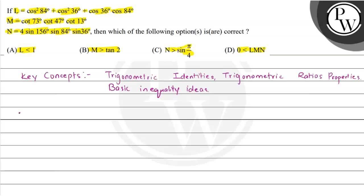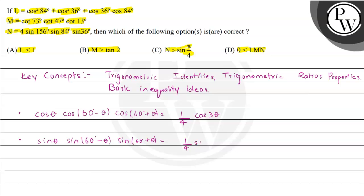The trigonometric identities we'll be using: first, cos of theta times cos of (60 minus theta) times cos of (60 plus theta) equals 1 upon 4 times cos of 3 theta. Second, sine of theta times sine of (60 minus theta) times sine of (60 plus theta) equals 1 upon 4 times sine of 3 theta. Third, sine of 3 theta equals 3 sine theta minus 4 sine cubed theta, and similarly cos of 3 theta equals 3 cos theta minus 4 cos cubed theta.